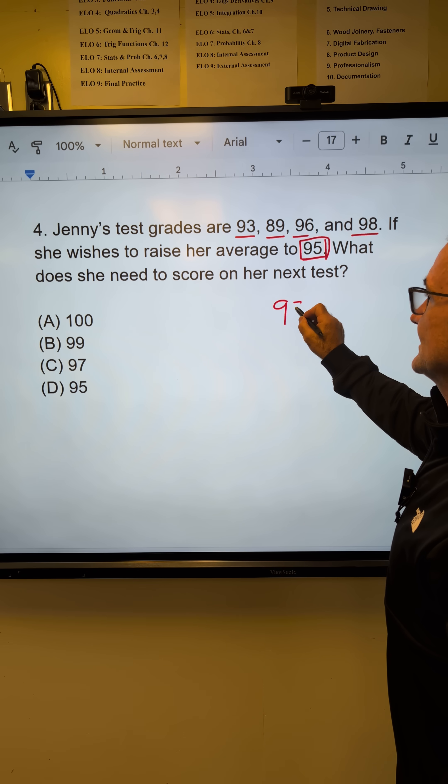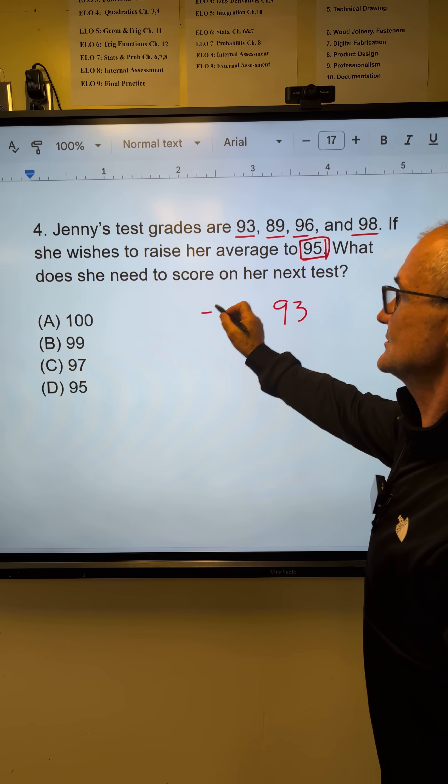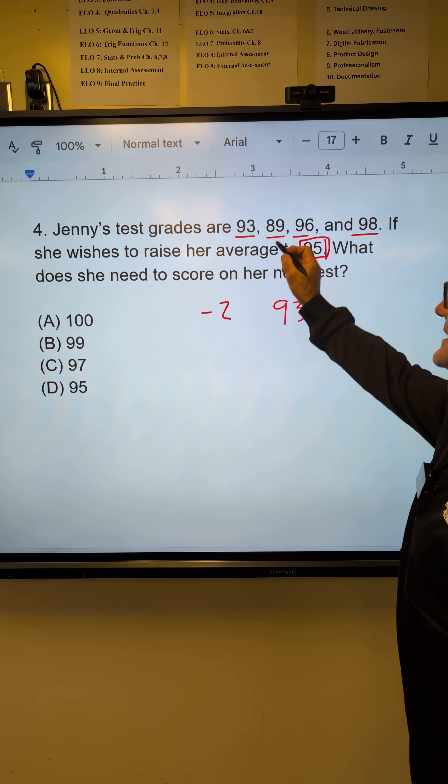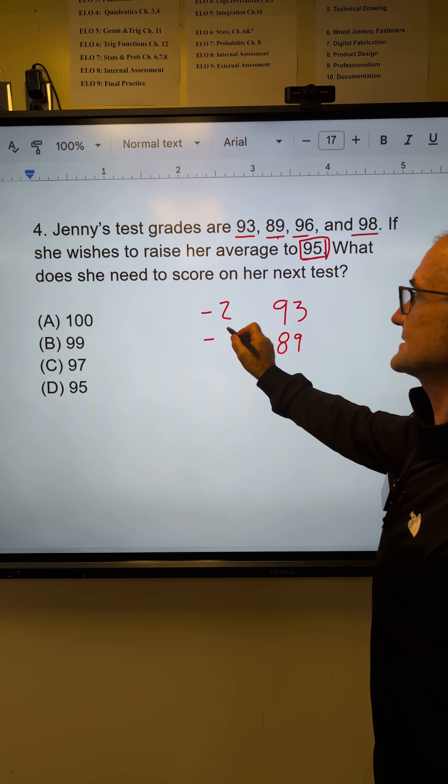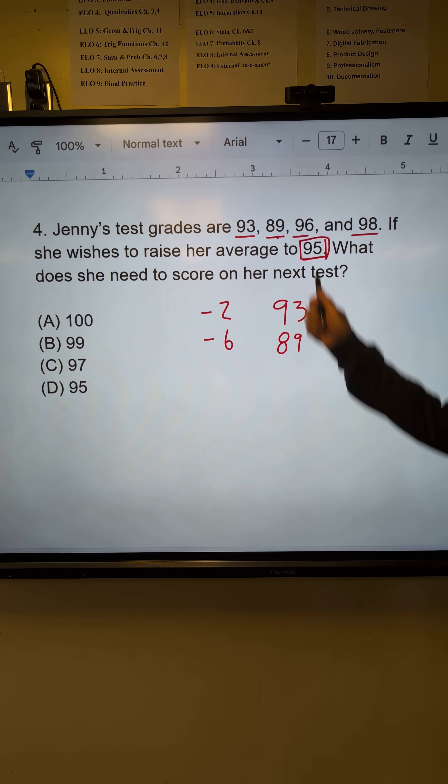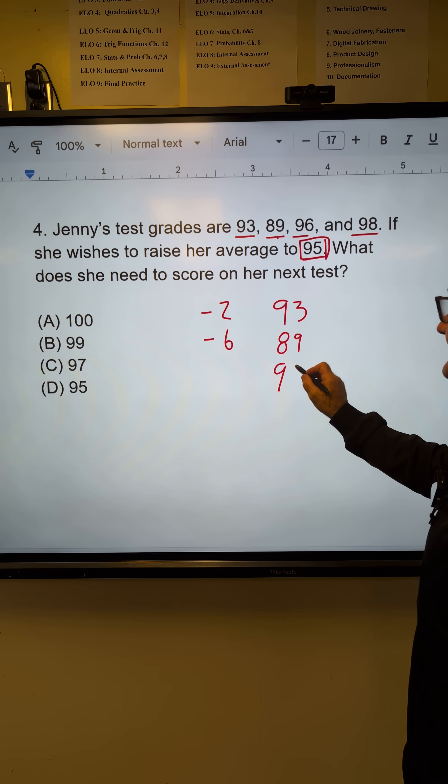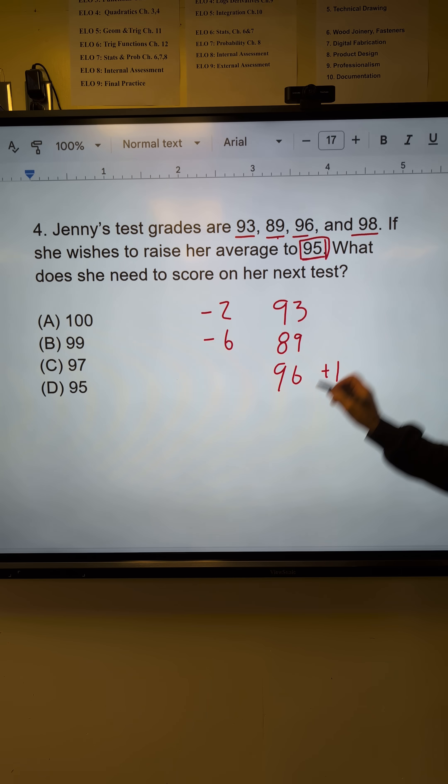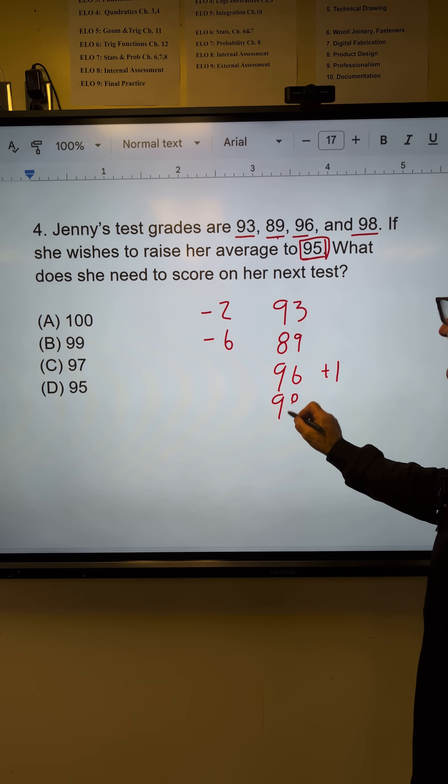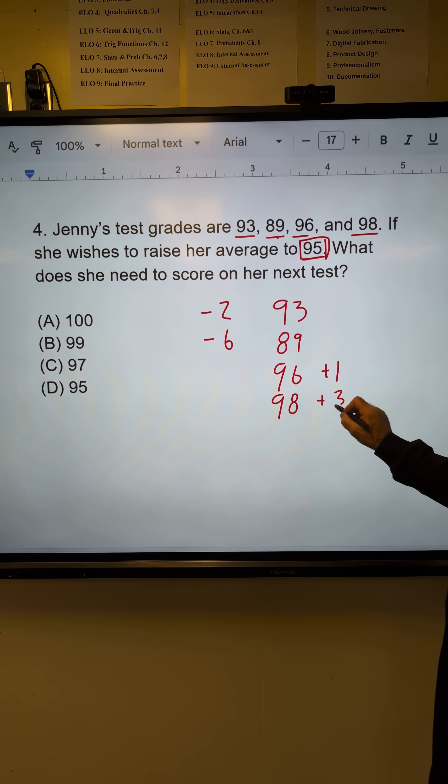Well, the first test, you've got a 93 on. That is 2 below the average. The next test, you've got an 89 on. That is 6 below the average. A 96, that is 1 above the average. And a 98, which is 3 above the average.